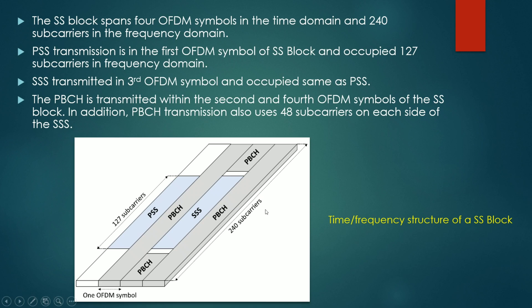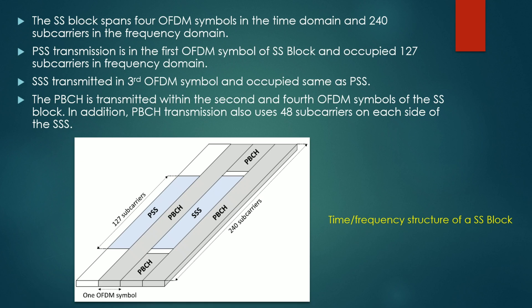The PSS transmission is in the first OFDM symbol of the SS block and it occupies 127 subcarriers. SSS is in the third OFDM symbol and it occupies the same space as PSS — that is 127 subcarriers.